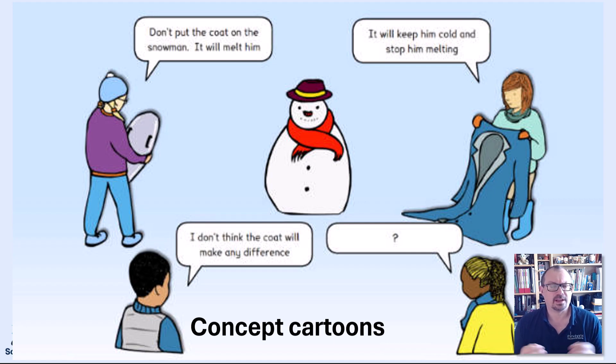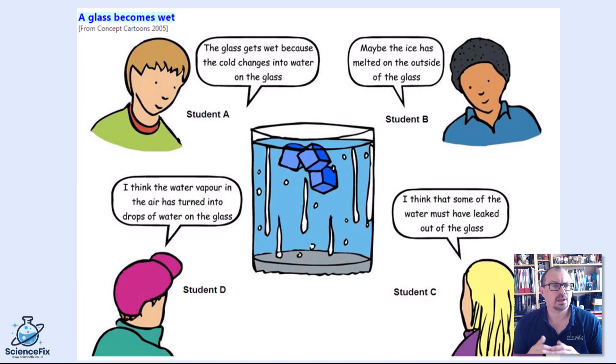The pupils might decide who they agree with, who they disagree with, and it hopefully will create some cognitive conflict and reveal some misconceptions with them. So this is the one we've mentioned previously about the snowman melting. Here's one about condensation on the glass. Can the children explain where the water comes from that sits on the side of the glass?